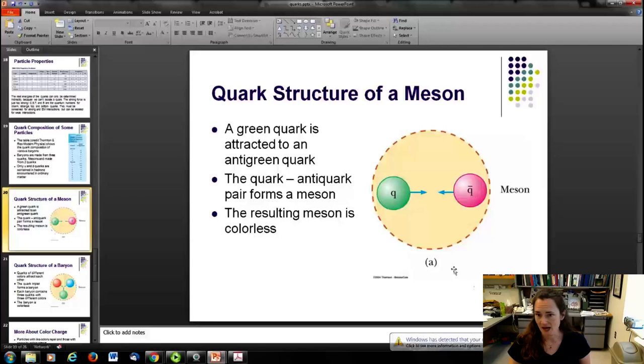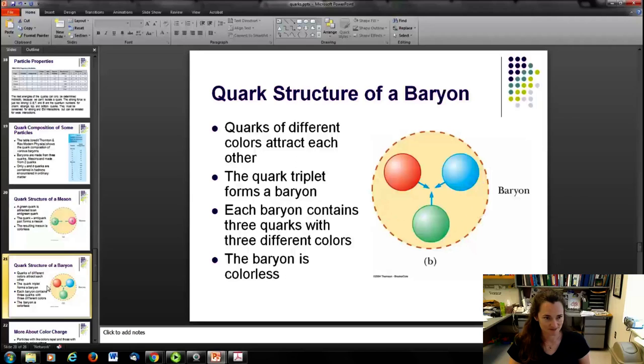So here you go. Here's your meson. I'm not really sure why an anti-green is pink here, but there you have it. This is a green quark attracted to an anti-green quark, and this quark-anti-quark pair is forming a meson. And when you combine a color and its anti-color, it's considered colorless. Here's a baryon with three quarks. Quarks of different colors actually attract each other just like the quark and the anti-quark pairs attract each other. It's just that the different colors attract each other less strongly than the quark-anti-quark pairs, but still very strong, just not as strong. So here you have your red, blue, and green. When you combine red, blue, and green, you have colorless, and that gives you a baryon.